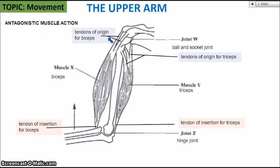What's included are the tendons of origin and insertion for each muscle. Always remember that tendons connect muscle to bone. A tendon of origin connects the muscle to the more stable bone — so at the shoulder joint, that would be the scapula and the clavicle. The tendons of insertion connect to the bones that are more movable and do most of the movement.